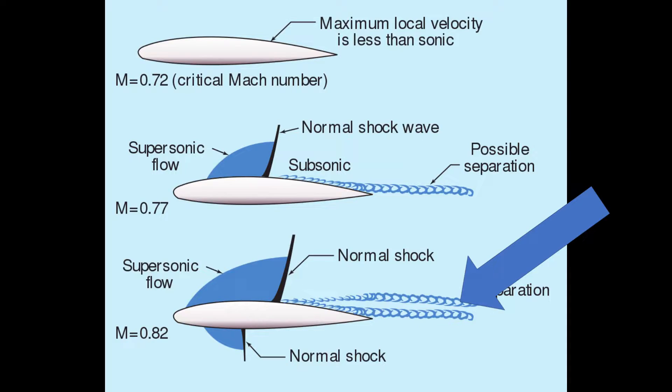When this shock wave is formed over the top surface of the wing, it can lead to a phenomenon known as flow separation. When flow separation occurs due to a shock wave, the flow after the shock wave becomes turbulent, meaning the aircraft is no longer generating enough lift to maintain steady level flight, and the aircraft can enter what's known as a stall.